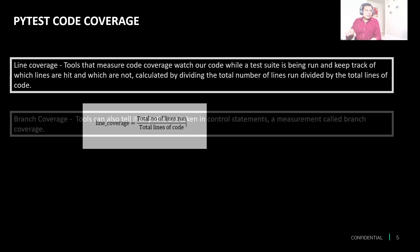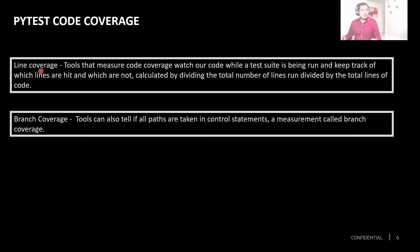Similarly, we can calculate branch coverage. If we have conditions or looping, any branch that is covered or missed will be calculated through branch coverage. Overall, combining line and branch coverage will be called code coverage.